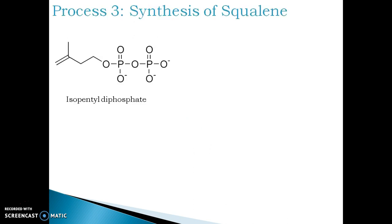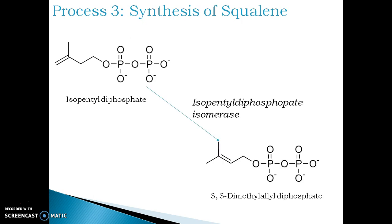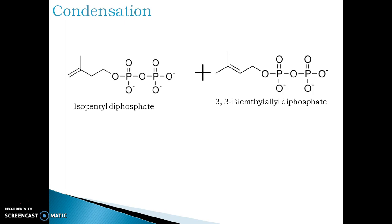Isopentyl-diphosphate undergoes isomerization to 3,3-dimethylallyl-diphosphate. Here you can see the site of unsaturation changes its position from the 3rd to the 2nd carbon in the product. This is followed by a condensation process where both molecules, isopentyl-diphosphate and 3,3-dimethylallyl-diphosphate, condense to form geranyl-diphosphate. This condensation reaction is catalyzed by cis-prenyl transferase.